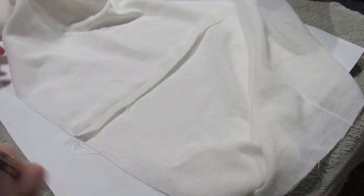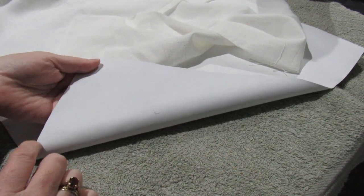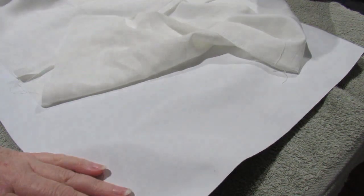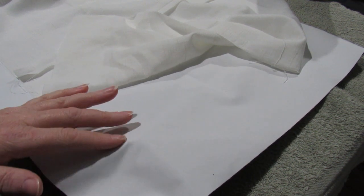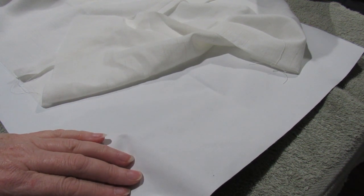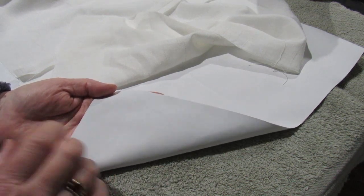I've just ironed this seam open which I'm going to lay on top of here. Now remember that there is actually a right side and a wrong side to blackout lining. The right side is the side that you can see the fabric has been woven, and then they put a finish on the other side which is the wrong side.